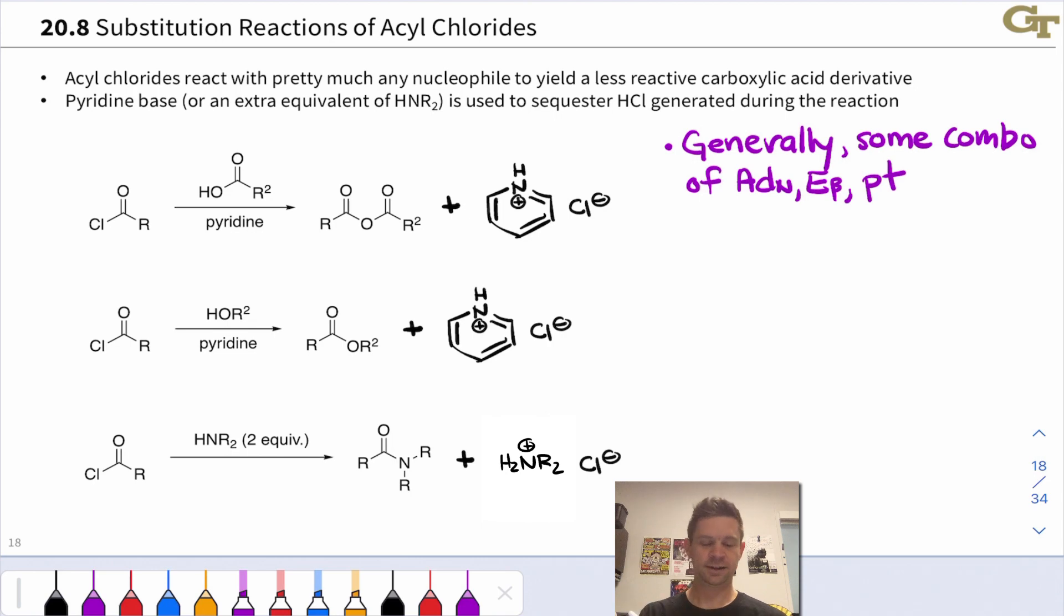Esters can also be made favorably from acyl chlorides. If we take the acyl chloride and treat with an alcohol nucleophile still using pyridine base, notice that a nucleophilic substitution has occurred. OR2 has essentially displaced Cl and the resulting structure is an ester.